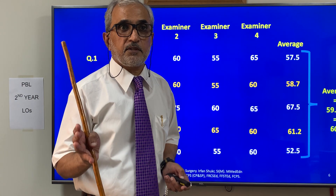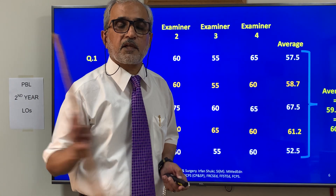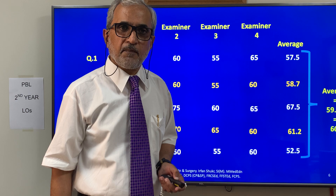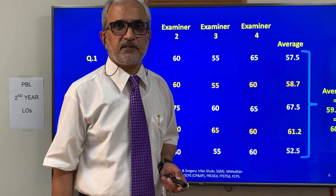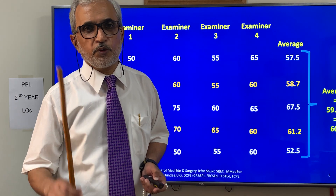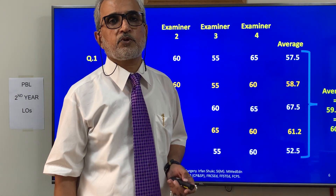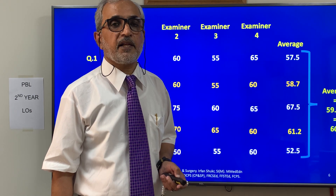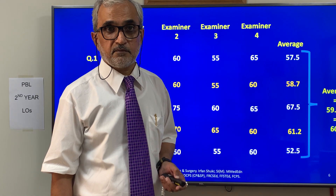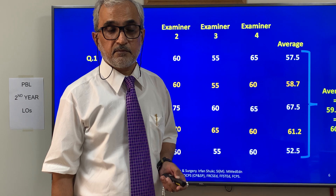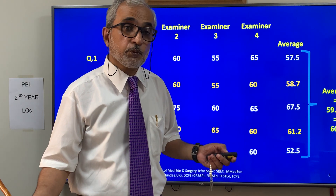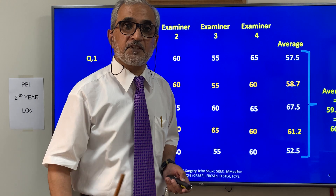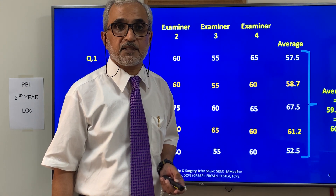So 60% is the cutoff score. If the total marks are 100, any student who gets 60 will pass, and any student who gets 59 or less will fail. If the paper is 150 marks, convert to percentage — those who get 60% will pass.